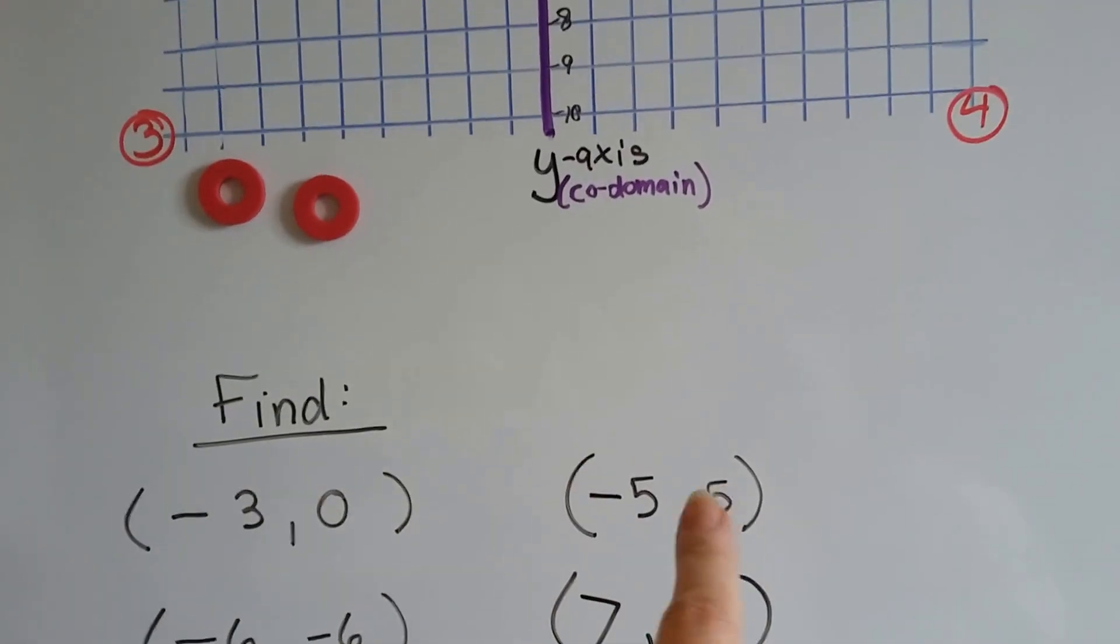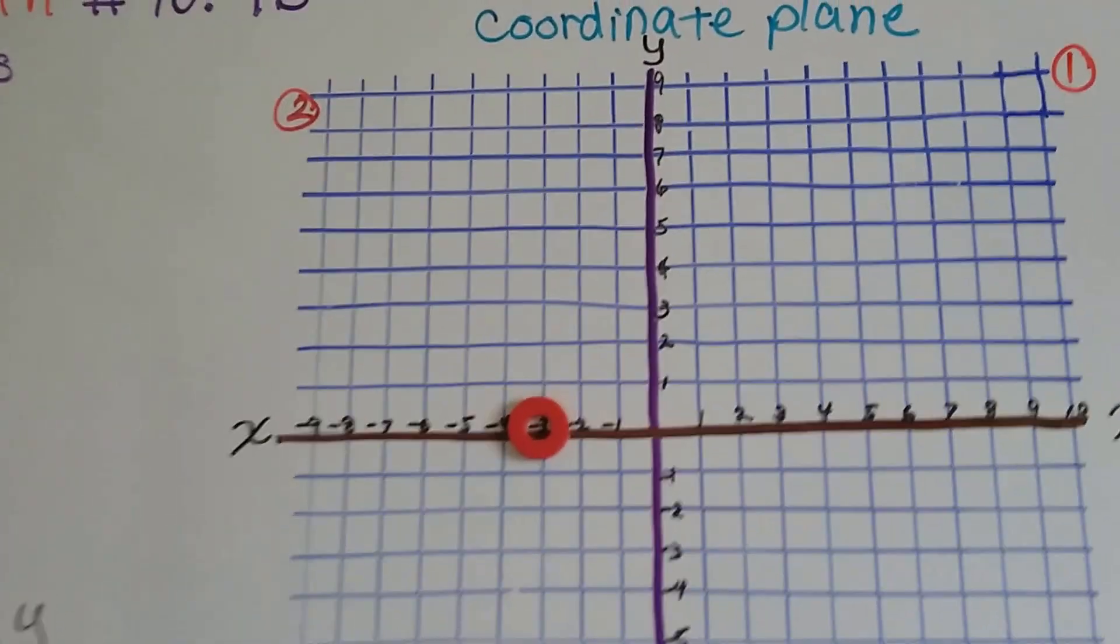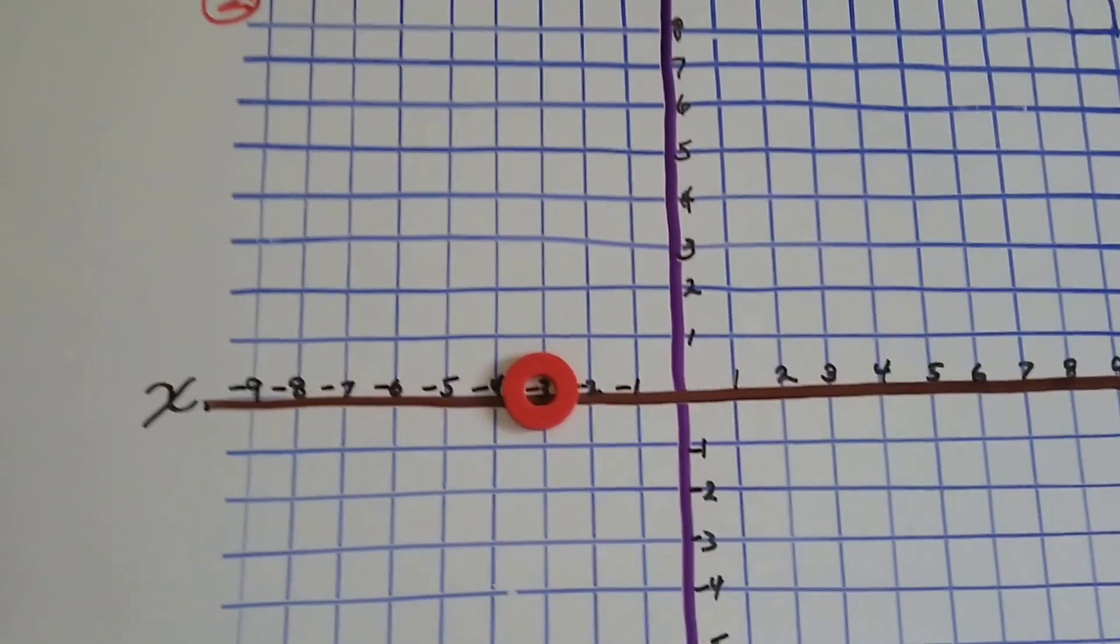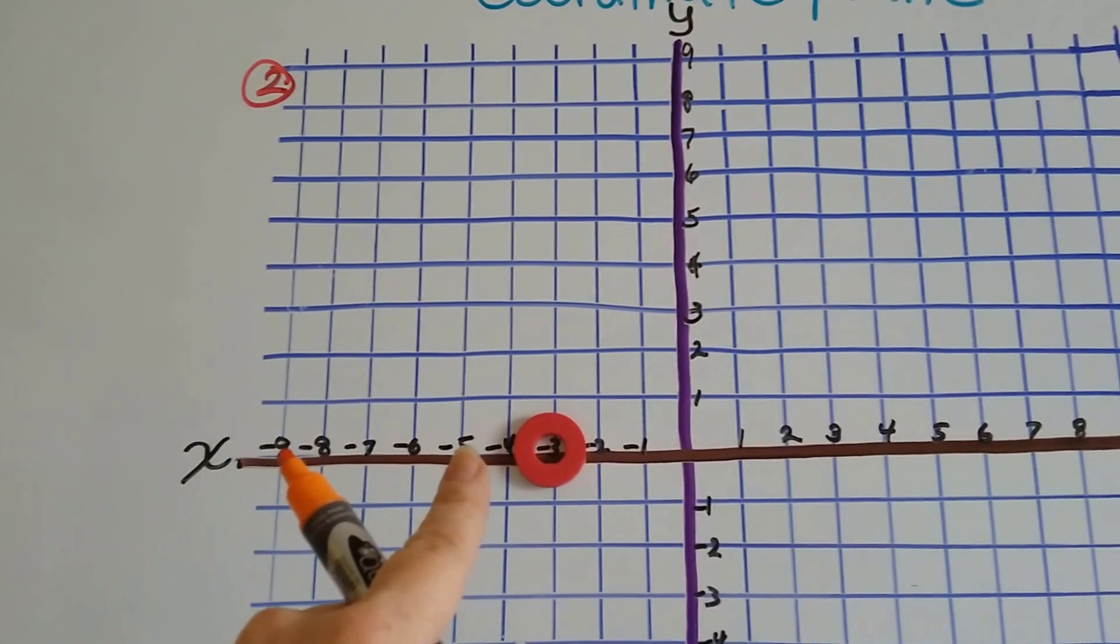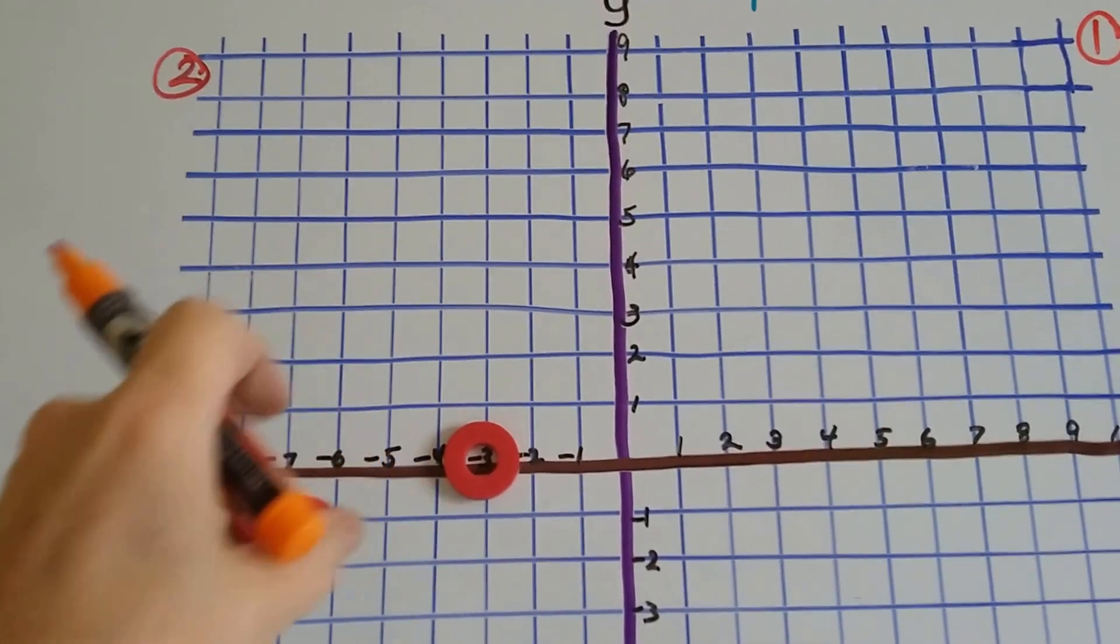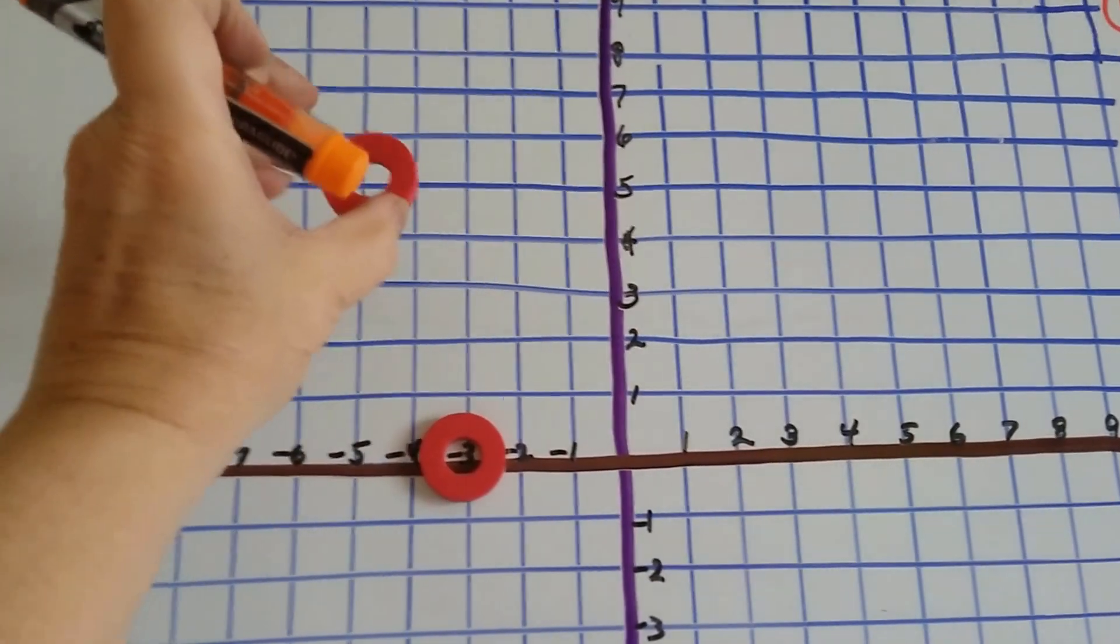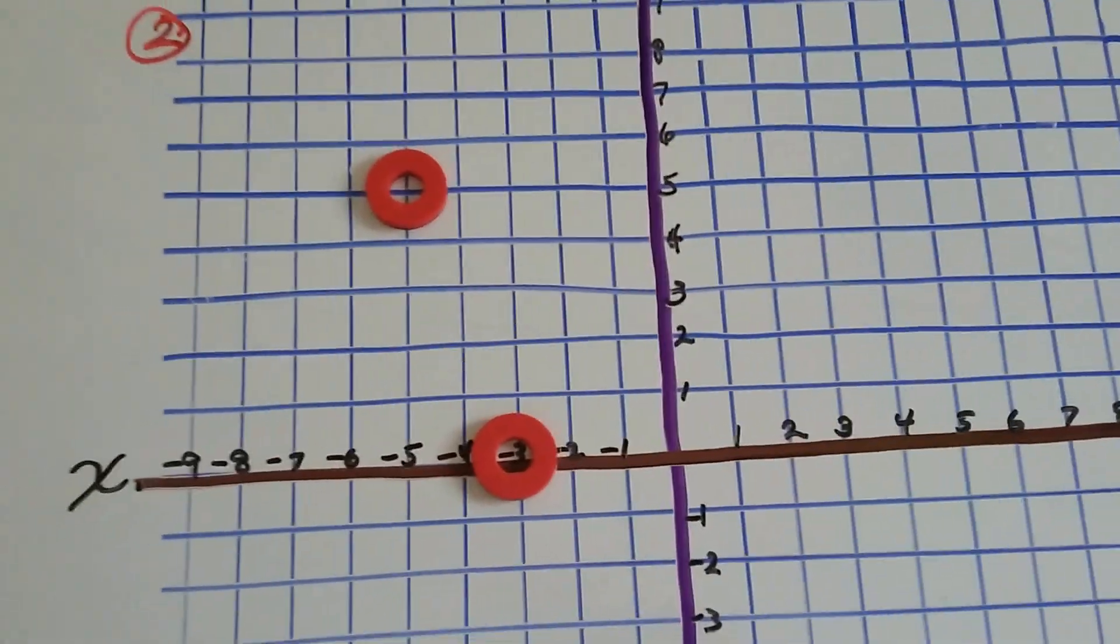Now, we've got negative 5, positive 5. I'm going to do the x-axis first. So, here's negative 5. And, now we have to find positive y. Well, the positive on the y line is up. So, negative 5, positive 5 is going to be right there.